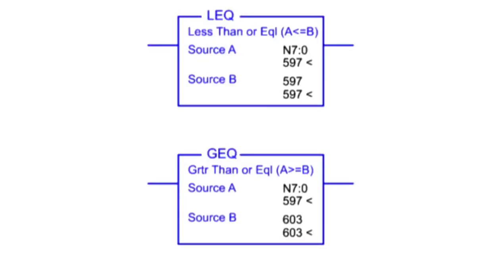A common method of temperature control is an on-off control system. Using comparison instructions in a PLC program, outputs are energized when the set point is reached.